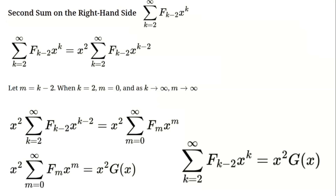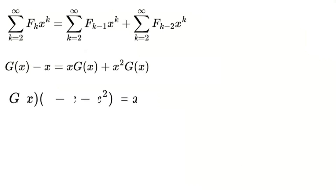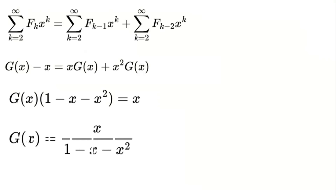Putting it all together, we have g(x) - x = x·g(x) + x²·g(x). Now let's solve for g(x). Rearranging, we get g(x) - x·g(x) - x²·g(x) = x. Factoring out g(x): g(x)·(1 - x - x²) = x. Now divide both sides by (1 - x - x²): g(x) = x / (1 - x - x²). An elegant closed form for the Fibonacci sequence.